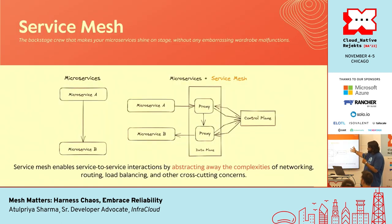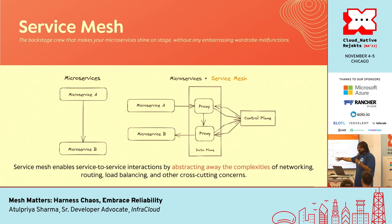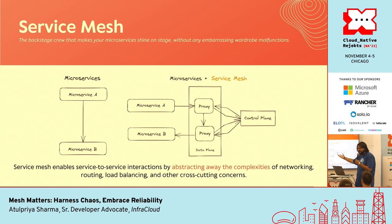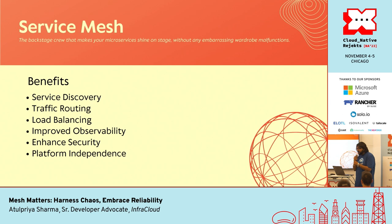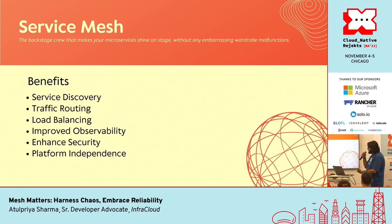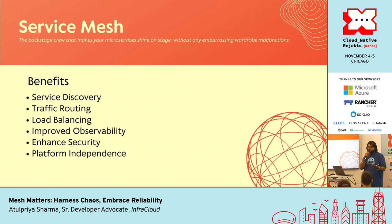So, service mesh — this is a very simple diagram of what a service mesh is, what it does, how it works. Usually it works with microservices, and then you have a proxy that becomes your data plane, you have a control plane, and then everything goes through that. There are a lot of different projects available. Istio is one of the most popular ones, which I would be using for this demo as well. When it comes to benefits, it helps with service discovery. Without a service mesh, it becomes really difficult to identify what microservices your application is using, which service is used where, and how the communication is happening between services.